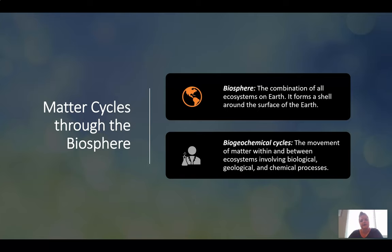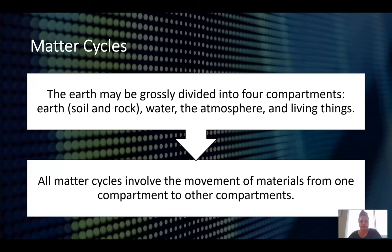In the biosphere, this is the combination of all of the ecosystems on Earth. When I say biosphere, I'm talking about every ecosystem that exists on Earth. The biochemical cycles are the movement of matter between ecosystems involving biology, geology, and chemical processes. Matter cycles are really important because pretty much nothing is created or destroyed. It is just recycled. Just like energy, all of these matter cycles are the same way. Nothing is created or destroyed.